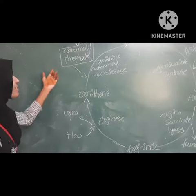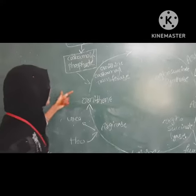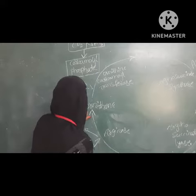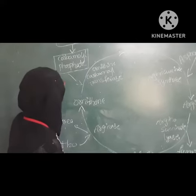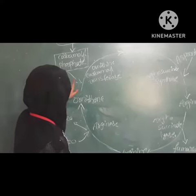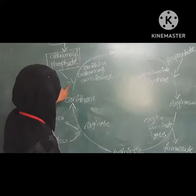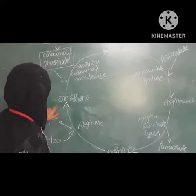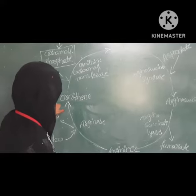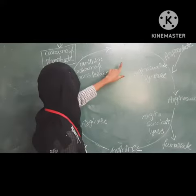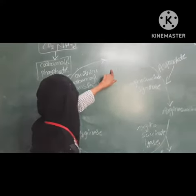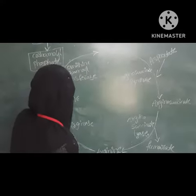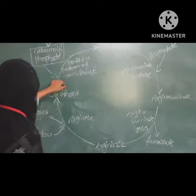In the first step, carbamoyl phosphate is added to the Urea Cycle. It combines with ornithine and citrulline, in the presence of an enzyme, and ornithine and carbamoyl transferase combine.